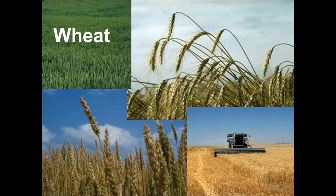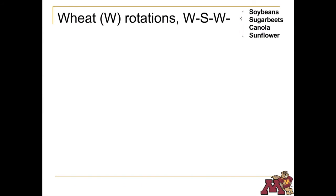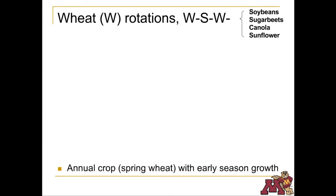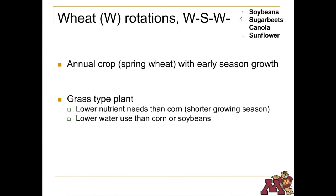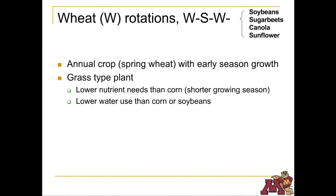Grown mostly for human consumption, wheat is another major annual crop in Minnesota. Most wheat is planted in the spring and harvested in the fall. Some varieties can be planted in late fall and are known as winter wheat. Because wheat is a grass, it requires less nutrients than corn, and it also uses less water on a per acre basis.